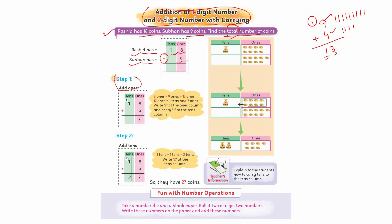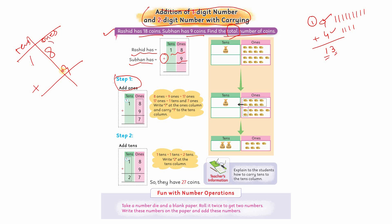Step one میں لکھا ہوا ہے: add ones۔ اگر 18 اور 9 کو الگ سے لکھیں تو یہ ones ہیں، یہ tens ہیں — دو places ہو گئیں۔ اب ان کو add کرنے کا مطلب یہ ہے کہ ones میں ones add کرنے ہیں۔